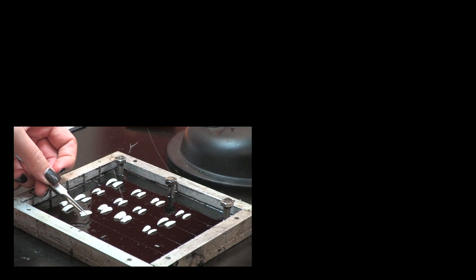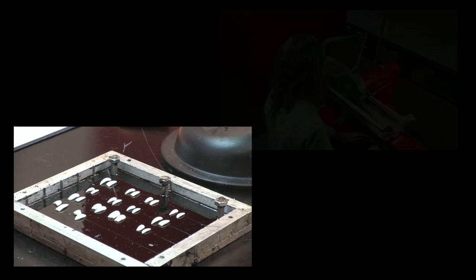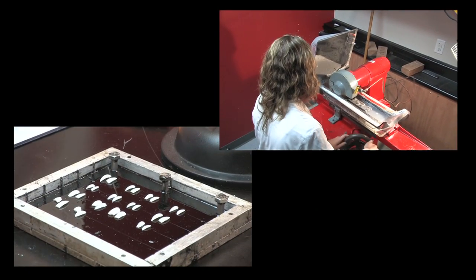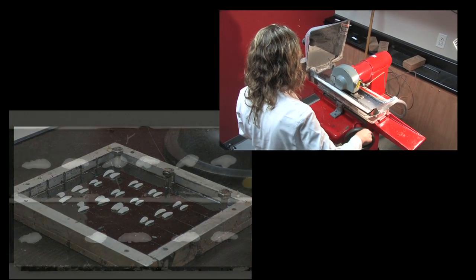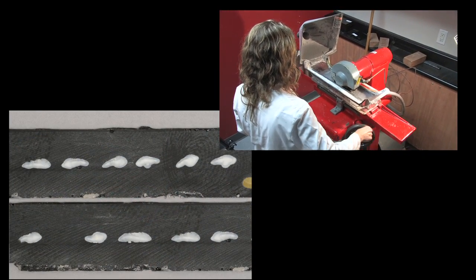This video demonstrates production methods for embedding and sectioning 50 to 100 otoliths at once. The entire process requires three days and will produce one millimeter sections of otoliths that can be used for age determination.